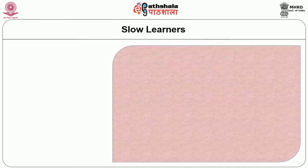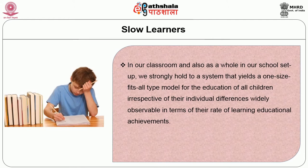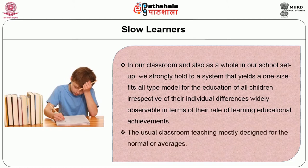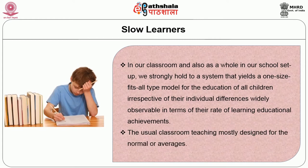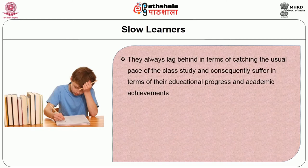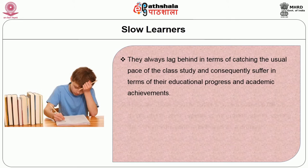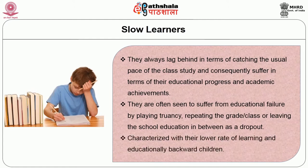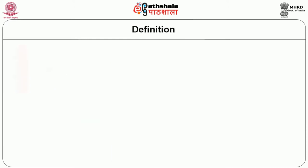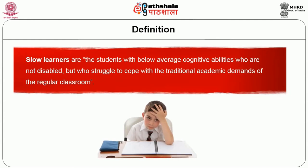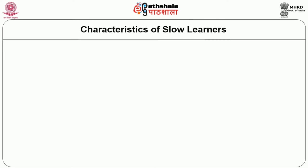The fourth topic is slow learners. In our classroom and school setup, we often hold to a one-size-fits-all model for education irrespective of individual differences widely observable in the rate of learning and educational achievements. Usual classroom teaching is mostly designed for normal averages. Slow learners always lag behind in catching the usual pace of class study and consistently suffer in educational progress and academic achievements, often experiencing educational failures, grade repetition or dropping out of school. Slow learners are students with below average cognitive abilities who are not disabled but who struggle to cope with traditional academic demands of the regular classroom.